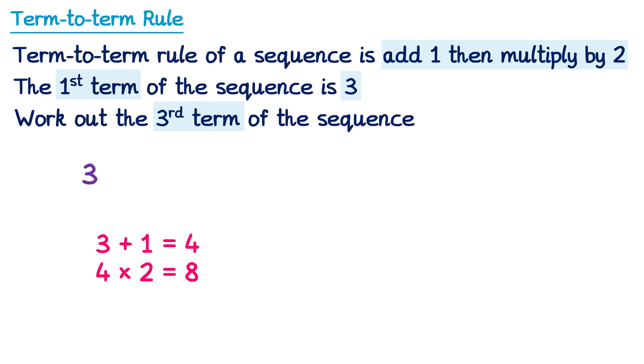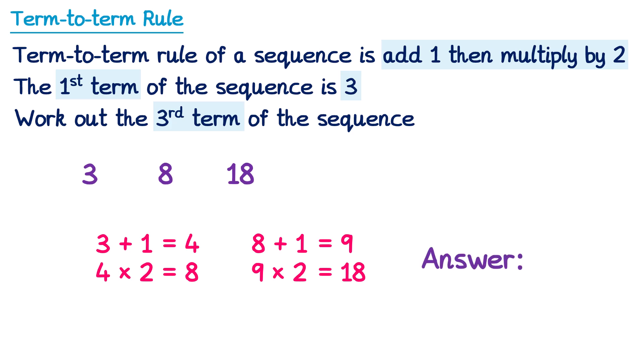So the second term of this sequence will be 8. Then to work out the third term we do the term-to-term rule again. So we need to add 1, then multiply by 2. So let's start with 8, add 1 to it, which gives you 9, and then multiply this by 2. So 9 multiplied by 2 is 18. So the third term is 18, which means the answer to the question was 18.